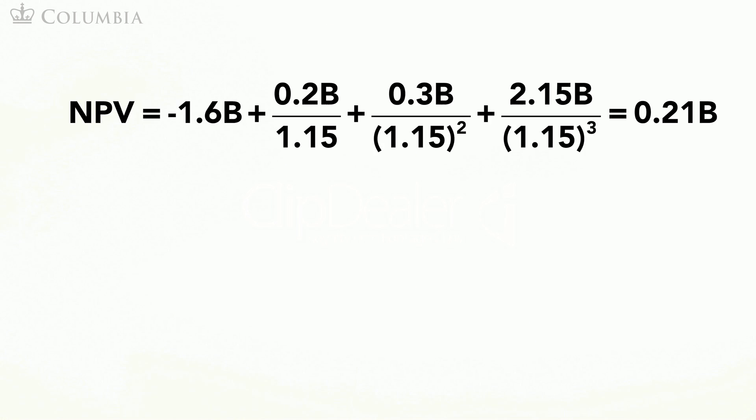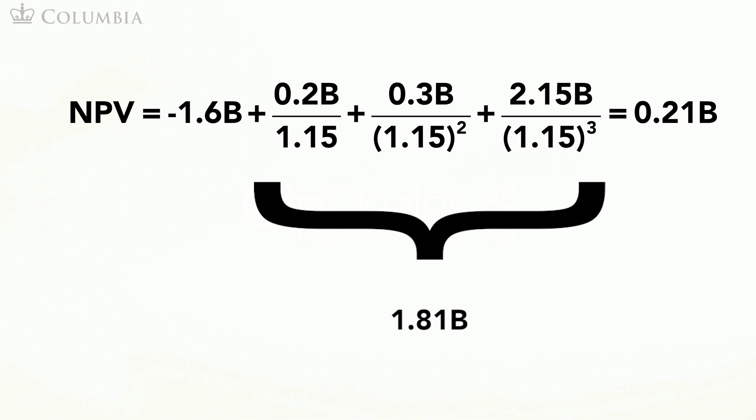In this case, the NPV is positive. The reason is that by acquiring this firm you are essentially buying a cash flow stream with cash flows of $0.2, $0.3, and $2.15 billion that you value at $1.81 billion, for only $1.6 billion. The difference between the value of the cash flows you acquire and the price you pay for them is the NPV. By undertaking this acquisition you create $0.21 billion in value.